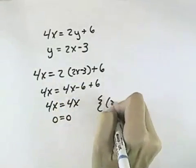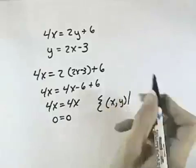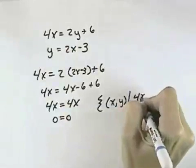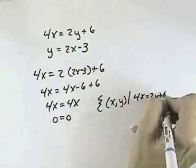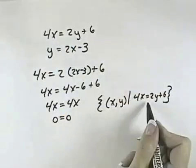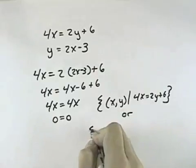But I can express those solutions as all points (x, y) such that either 4x equals 2y plus 6, using my first equation. It's all ordered pairs that satisfy that equation, that would be a correct solution.